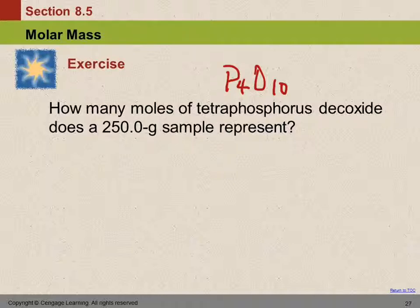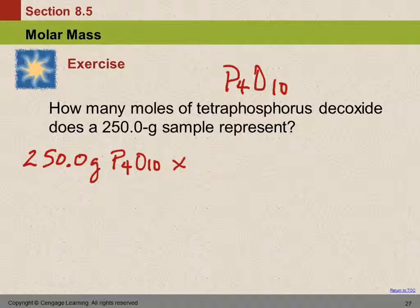Tetra means 4, so 4 phosphorus. Deca means 10, 10 oxygens. So it's really a compound. So they're telling us that we have 250 grams of P4O10. And they're asking how many moles. So we're going to multiply by moles of P4O10 and divide by grams.